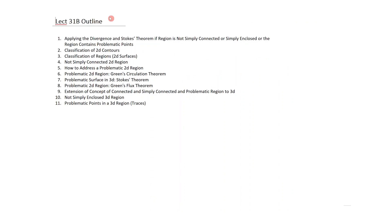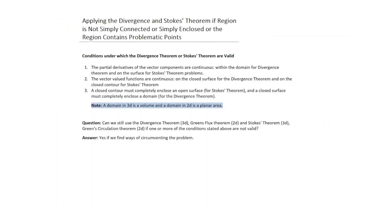The second slide is a summary of the content to follow. We'll apply the divergence and Stokes theorem if a region is not simply connected, not simply enclosed, or if the regions contain problematic points. Up to this point, when we applied the divergence theorem, Stokes theorem, or Green's theorems, we made certain assumptions regarding the nature of the fields, surfaces, regions, or contours we're dealing with.